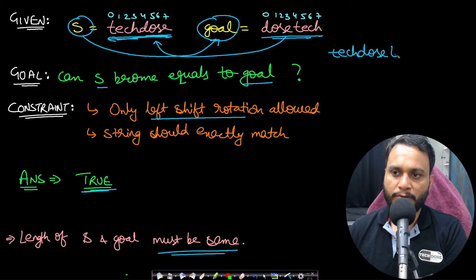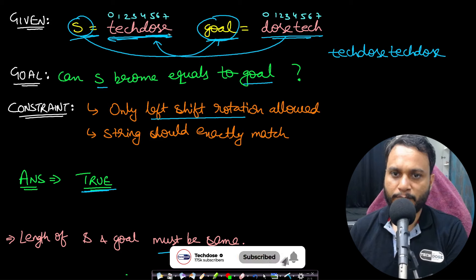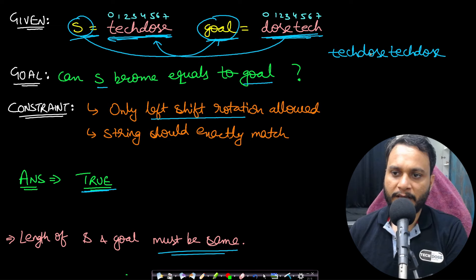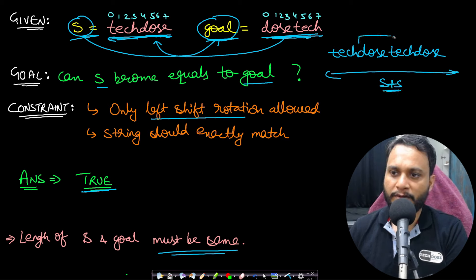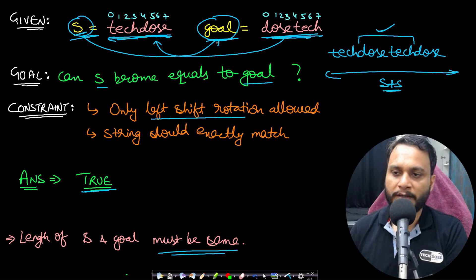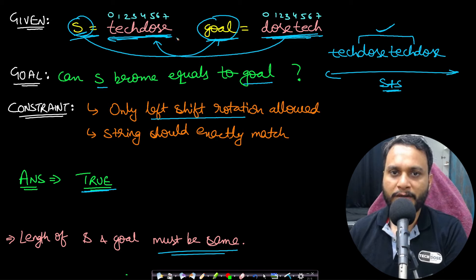Appending s two times gives 'techdose' + 'techdose'. If goal can become equal to s after some circular rotations, you will always find 'dosetech' as a substring in this concatenated string. This works because appending s with s removes the constraint of circular rotation — it contains all possible rotations as substrings.